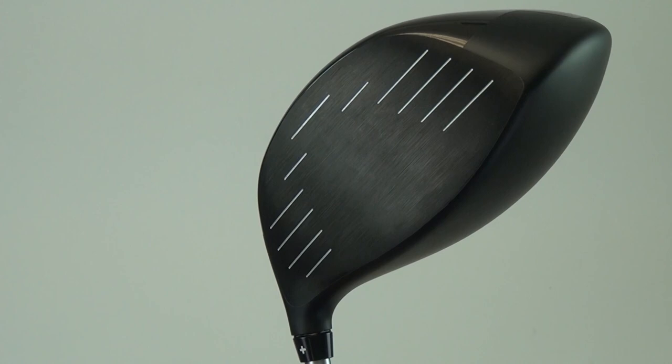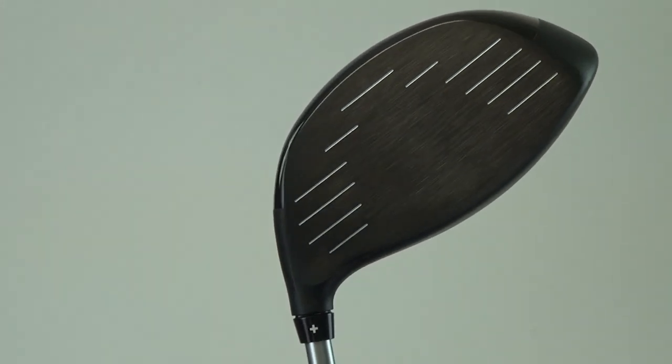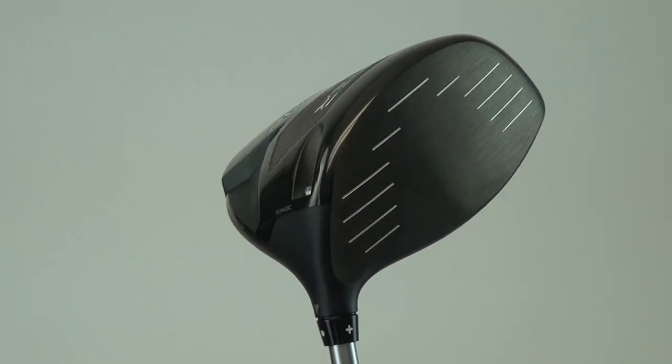The hosel options allow you to add either a half degree of loft, leave it at the neutral position, take a half degree loft off, or put it in the neutral position and make it one degree flat to give you trajectory tuning. This really allows the consumer to dial in their trajectory on their driver.